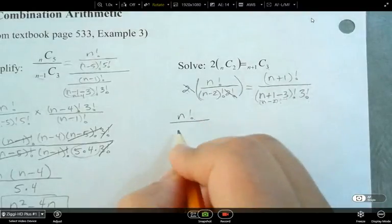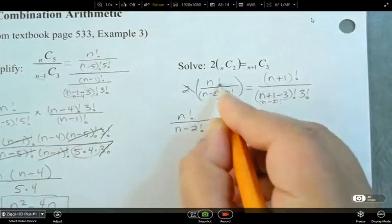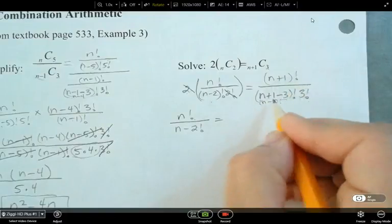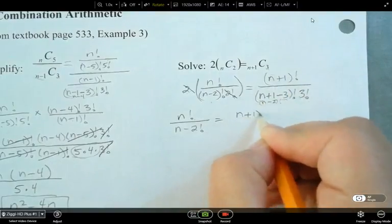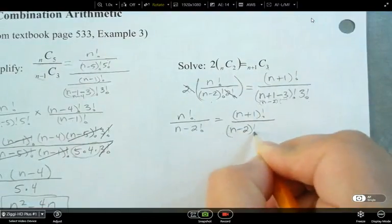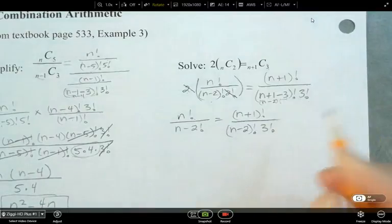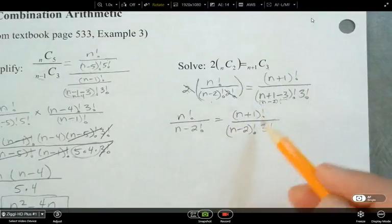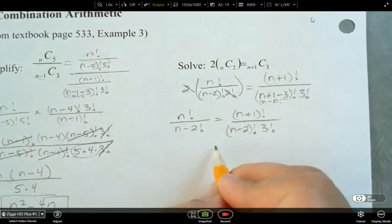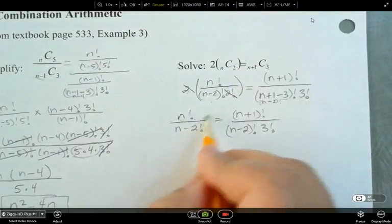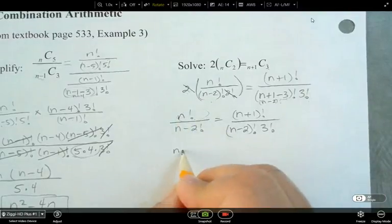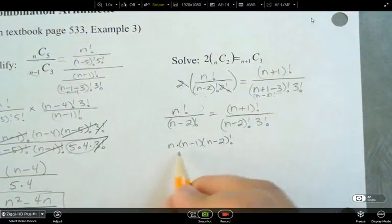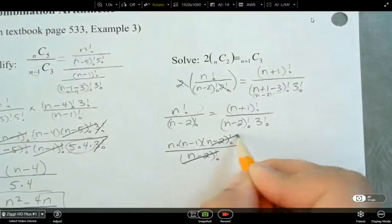I've got n factorial over n minus 2 factorial from this side here. And then on this side, I've got n plus 1. And then I've got n minus 2 here. Now, I need to get this written out so I can simplify the n minus 2 factorial out. And I've got one here as well that I can write out. So let's expand this so that it's n times n minus 1 times n minus 2 factorial.